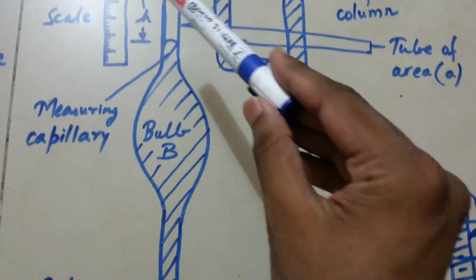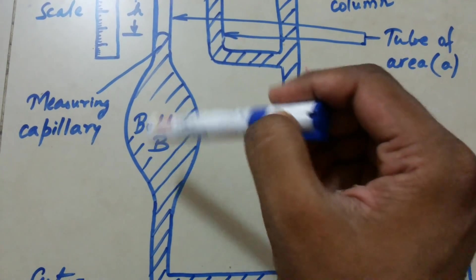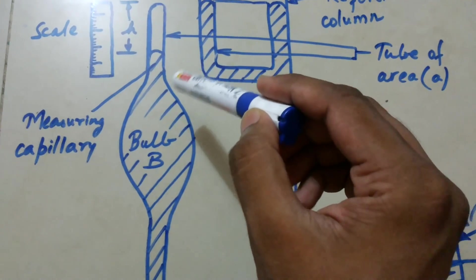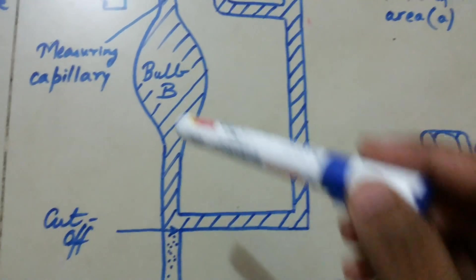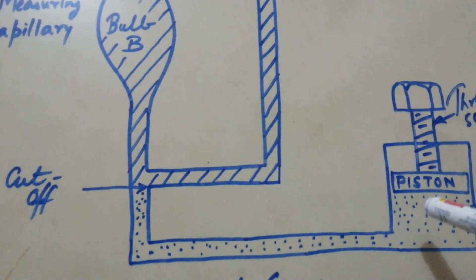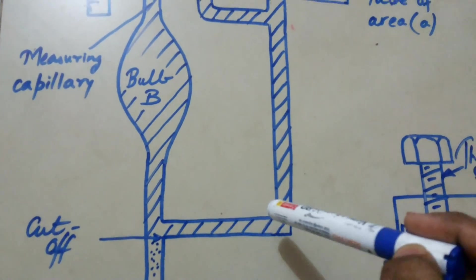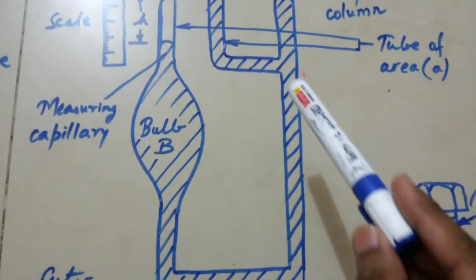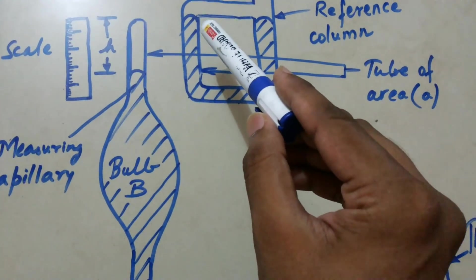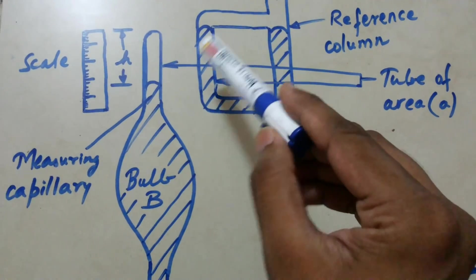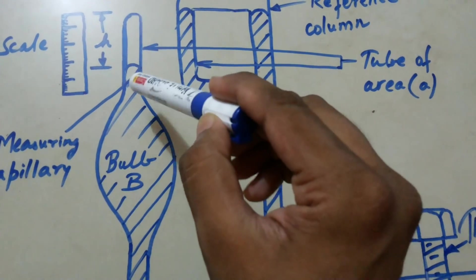Once the gas is trapped, we know the volume of that particular gas because we know the volume of the bulb and we know the volume of this particular capillary tube. Then the mercury starts rising in both this bulb as well as this reference tube. When mercury reaches the reference point, the gas also gets compressed.